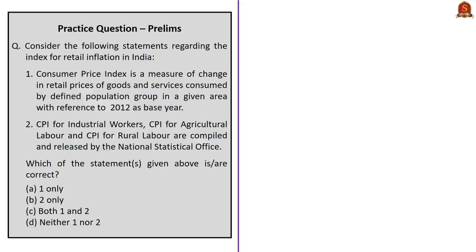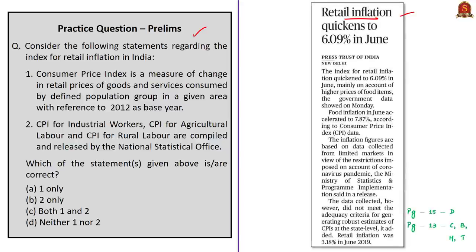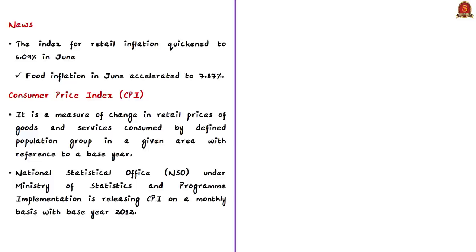Now let's take up a question based on retail inflation in India. The news article says that the index for retail inflation increased to 6.09% in June 2020, mainly because of higher prices of food items, and food inflation accelerated to 7.87%. In this context, we discuss the Consumer Price Index (CPI), which is a measure of change in retail prices of goods and services consumed by a defined population group in a given area with reference to a base year. The National Statistical Office (NSO) under the Ministry of Statistics and Programme Implementation releases CPI on a monthly basis with a base year of 2012.